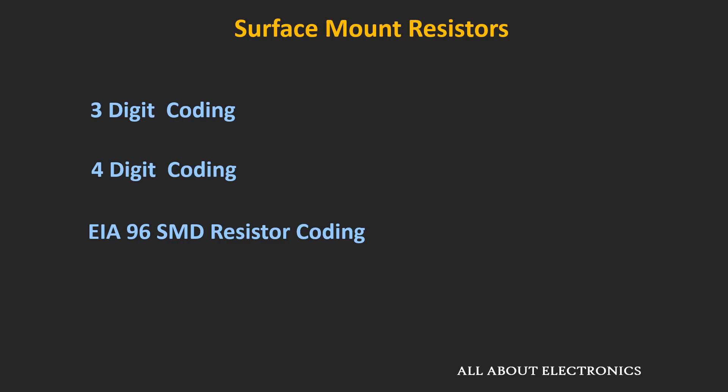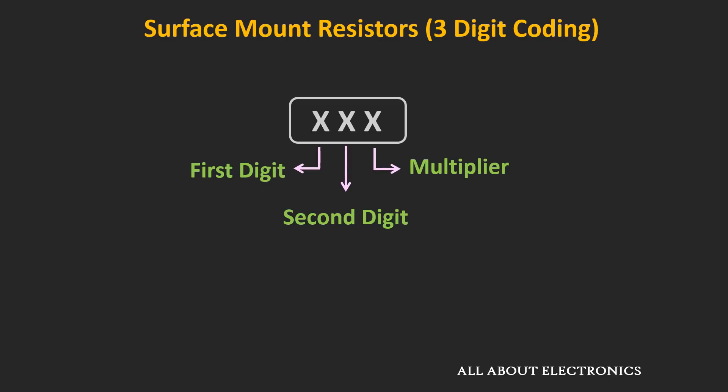Usually three types of coding schemes are used for surface mount resistors. The first type is the three-digit coding scheme. In this scheme, three digits are used to define the value of the resistor. The first two digits define the two most significant digits of the resistor value, while the third digit defines the multiplying factor for the resistor value.